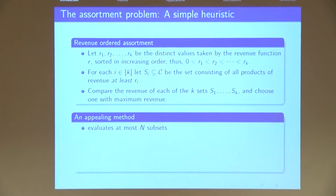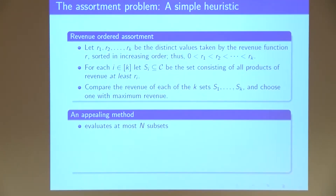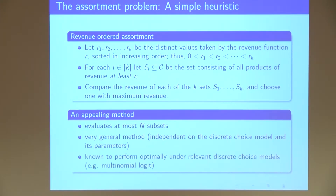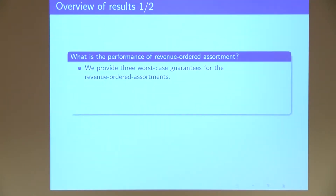This heuristic evaluates at most n subsets, which is very appealing. It's also very general — you can apply this strategy for any discrete choice model, as long as you can evaluate the expected revenue for every subset S1 to Sk. And it performs optimally in some models, such as the multinomial logit model. What we want to do is find out the worst-case performance guarantees of this strategy under quite general discrete choice models — so how bad could it be if you apply this strategy?